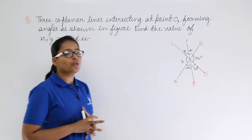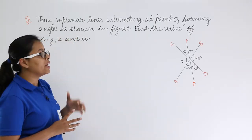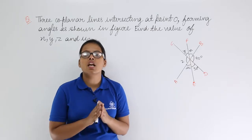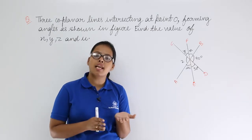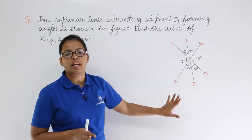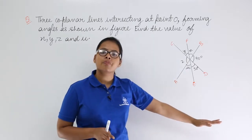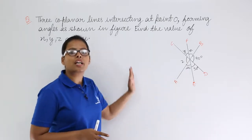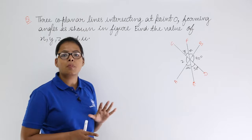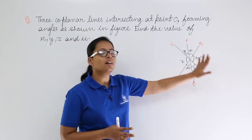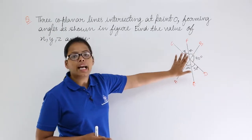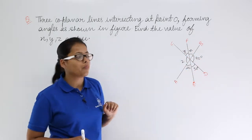First, you should know what coplanar lines are. Coplanar lines are lines which lie in the same plane. Here, this is our plane — the x-axis and the vertical y-axis form a two-dimensional plane. All three lines are lying in this same plane.